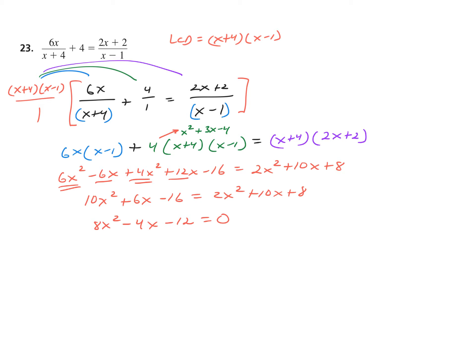Now, we saw these in class. The adventurous would go ahead and multiply AC, get negative 96, and go from there. But I want to multiply through by one-fourth — a very much last-semester strategy. I get 2X squared minus X minus 3 equals 0. Much nicer to work with.